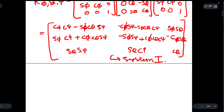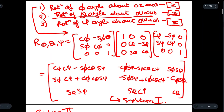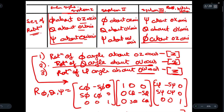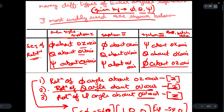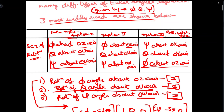Now for System 2 — as discussed, there is only a slight change from System 1. Everything is the same: we again rotate the oz axis by phi. But instead of ou, we use the ov axis. The ow axis remains the same.